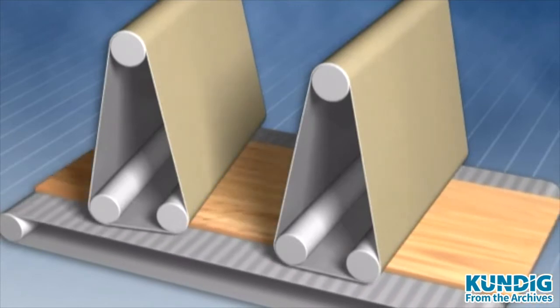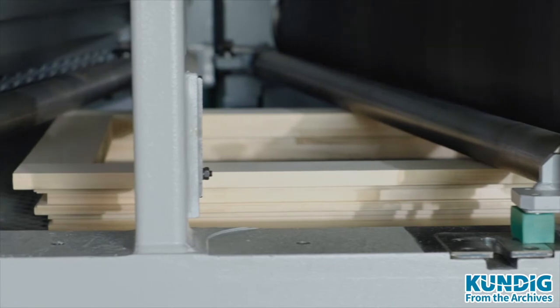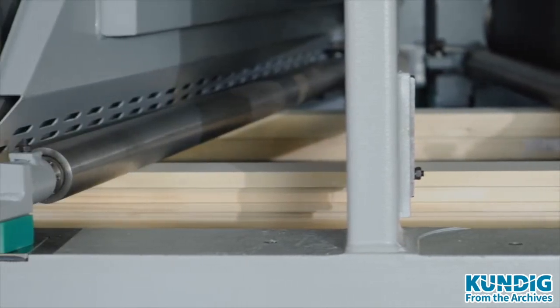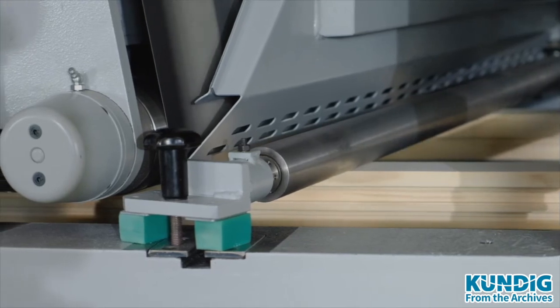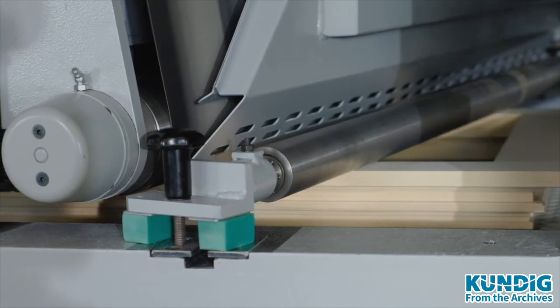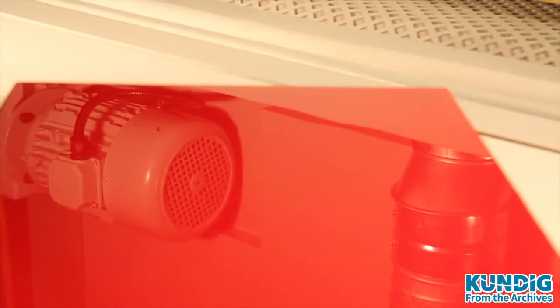Kündig's exclusive sanders with a straight and an oblique sanding unit are perfect lacquer and wood sanding machines. Because of the various attack angles, wood fibers are easily and efficiently eliminated. The resulting surface quality is an ideal basis for lacquering.